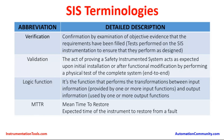Validation is the act of proving a Safety Instrumented System acts as expected upon initial installation or after functional modification by performing a physical test of the complete system end to end. Validation means testing a particular operation sequence of the Safety Instrumented Function — initiating the sensor to reach its maximum limit, sensing level high, pressure high, or temperature high, then the logic is performed automatically and the respective final element takes action to close. This complete testing is known as validation and is performed only once when the system is implemented or the SIS is modified.